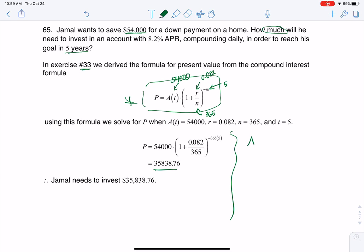Usually when I run these problems, I just write my interest formula, 1 plus R over N to the NT, and then I start plugging away.